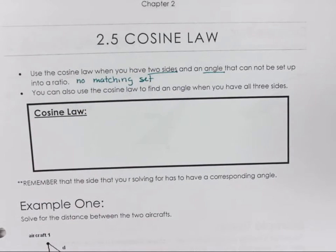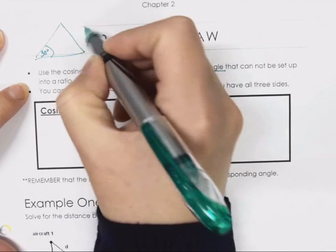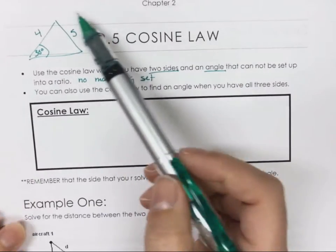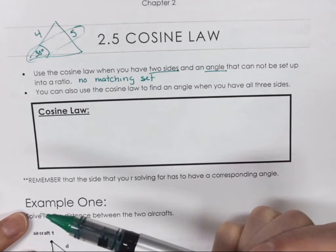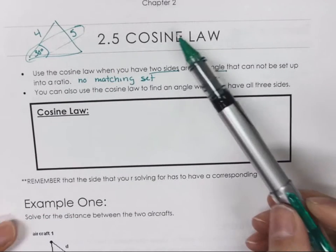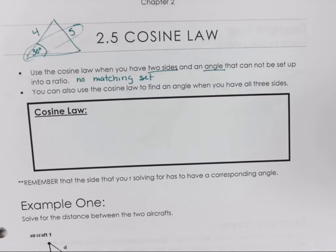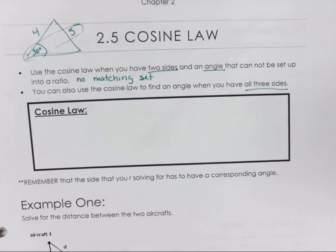When we did sine law, you needed to have a matching set. You had to have the angle and its matching side. If I had 30 degrees here and a side of 5 and a side of 4, I would use sine law because I have my matching set.